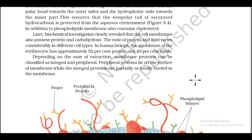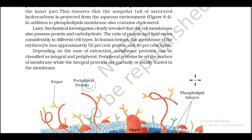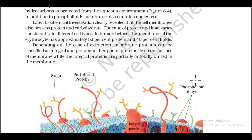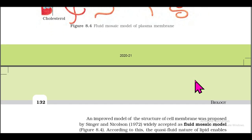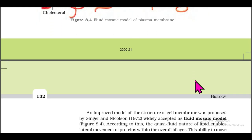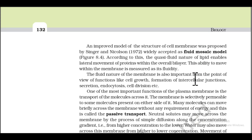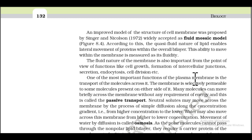Later biochemical investigations clearly revealed that the cell membrane also possesses protein and carbohydrate. The ratio of protein to lipid varies considerably in different cell types. In human beings, the membrane of the erythrocyte has approximately 52% protein and 40% lipids. Membrane proteins can be classified as integral and peripheral: peripheral proteins lie on the surface of the membrane, while integral proteins are partially or totally buried in the membrane.